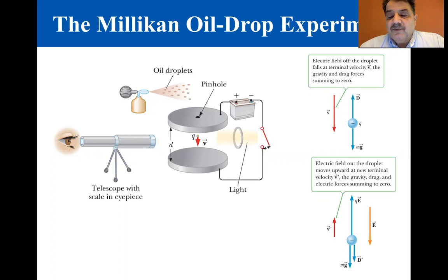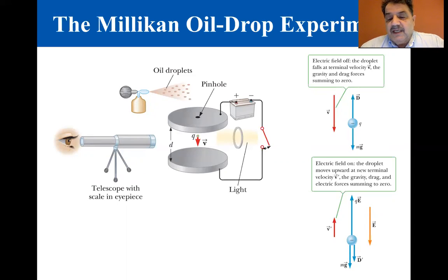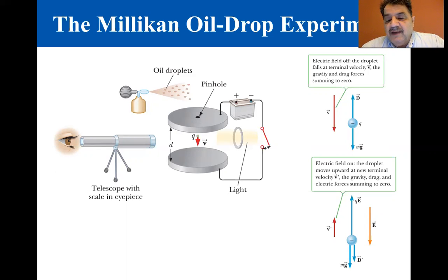Now suppose an electric field is set up between the plates by a battery connected so that the upper plate is positively charged. In this case, a third force QE acts on the charged drop. Because Q is negative and E is downward, the electric force is upward, as in the bottom right figure.